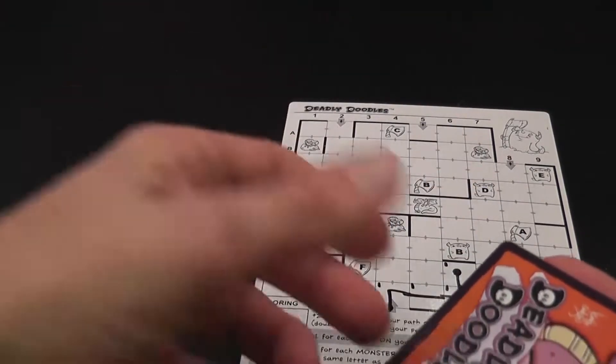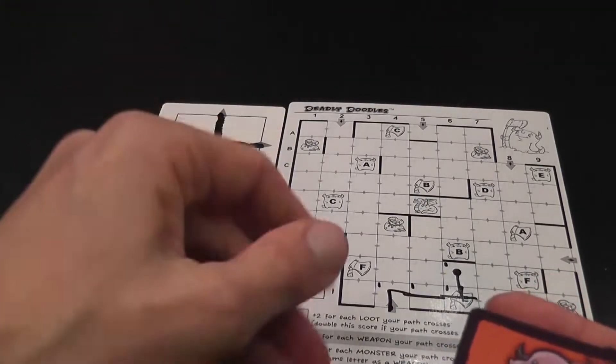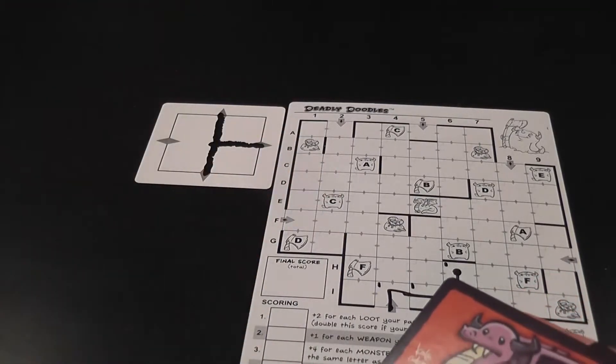It also marks down the number of turns. At the end of the seventh turn, then the player with the highest score, that's what we tell these points, highest score wins the game.